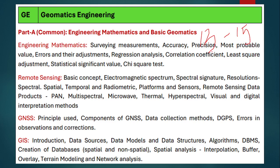Then Remote Sensing basic concepts: electromagnetic spectrum, spectral signature, temporal and radiometric resolution, different sensor types. Then GNSS — principal and huge components of GNSS. GNSS is one of the toughest subjects. Both GNSS and engineering mathematics combined carry greater than 25 marks every time. So you need to study these topics thoroughly. Total engineering mathematics and basic geomatics covers 55 marks from this section.